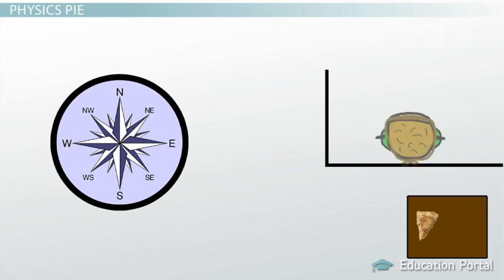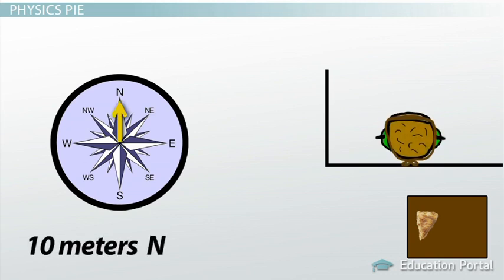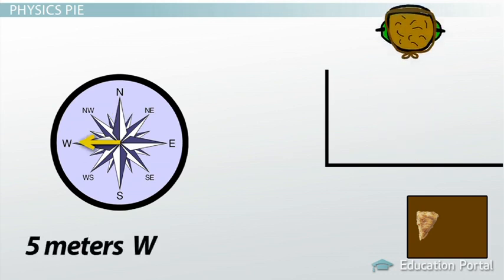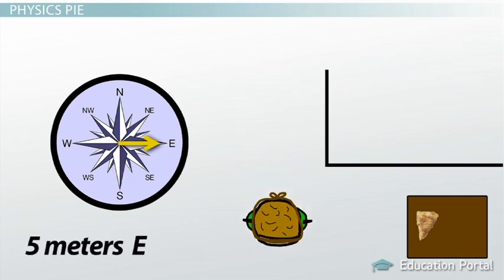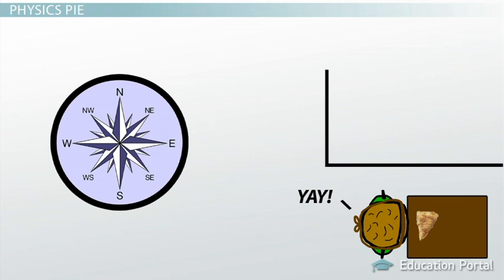I'll give you another chance. Walk 10 meters north, then 5 meters west, then 12 meters south, then 5 meters east. Congratulations, right? Pretty tasty pie.